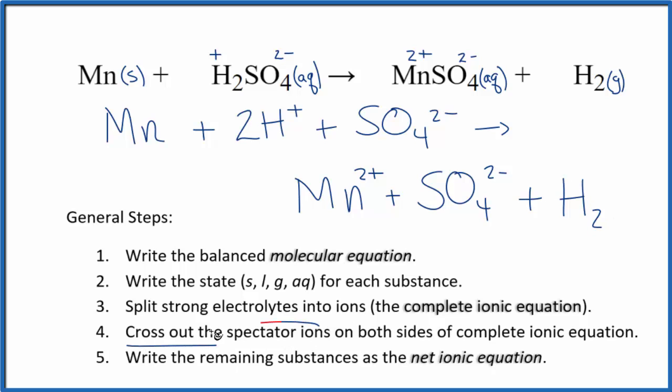Now we can cross out the spectator ions. They're on both sides of the complete ionic equation. So the only thing I see that's the same in the reactants and in the products is that sulfate ion. So that's the spectator ion. We can cross that out.